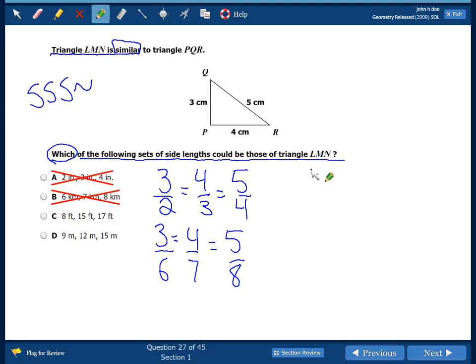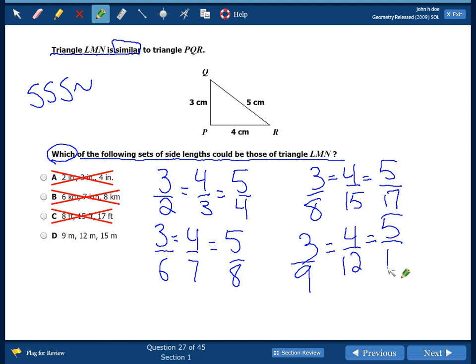Try the next one. 3, 4, and 5. We have 8, 15, and 17. Once again, that doesn't work. So our last one, 3, 4, 5, we have 9, 12, and 15. All of these simplify to 1/3. So that works. We have similar triangles now by side, side, side similarity. The sides have to be in proportion for the triangle to be similar.